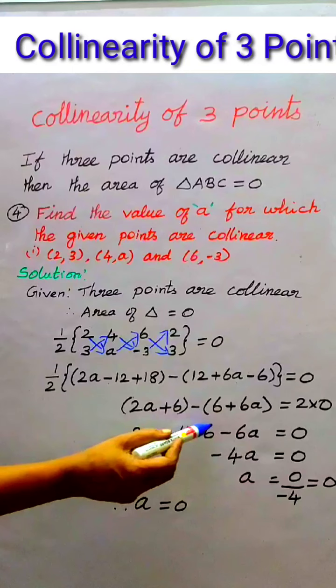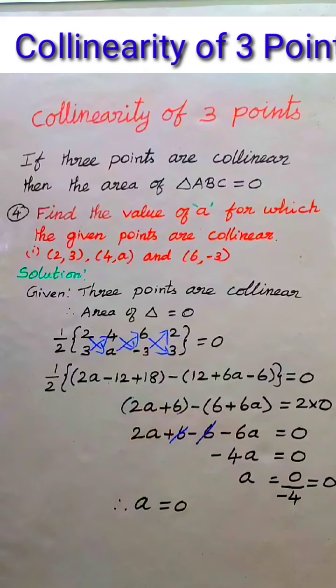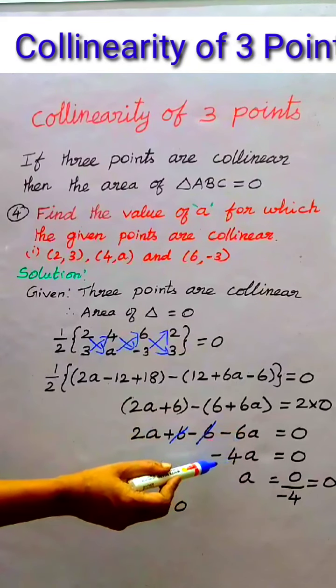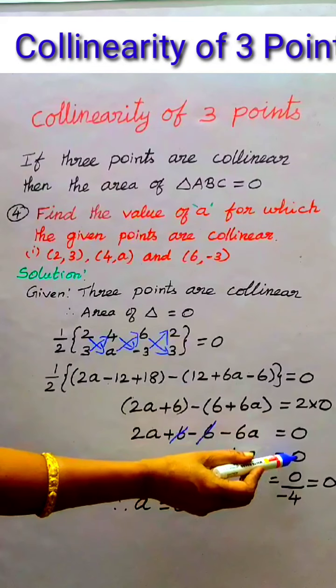Plus 6 minus 6 is 0. So 2A minus 6A equals minus 4A. Therefore, minus 4A equals 0.